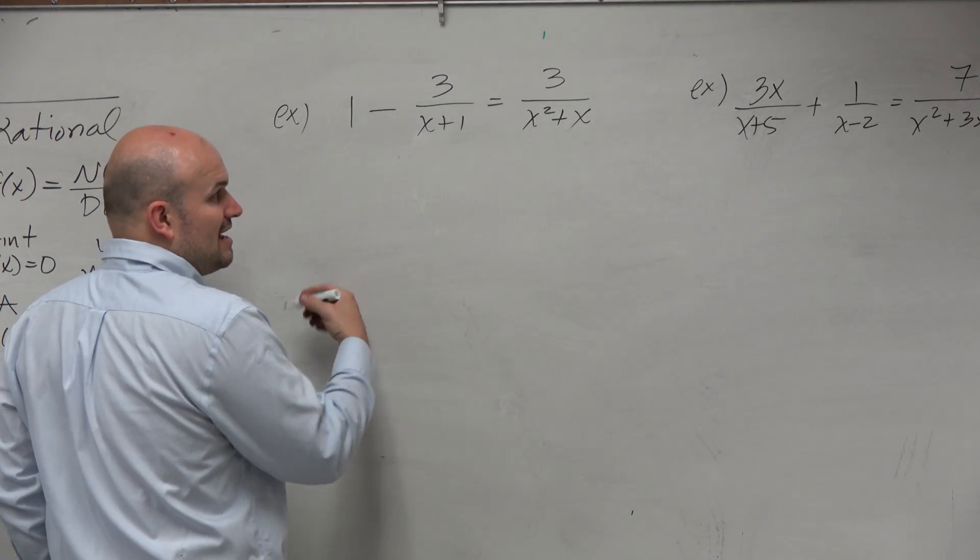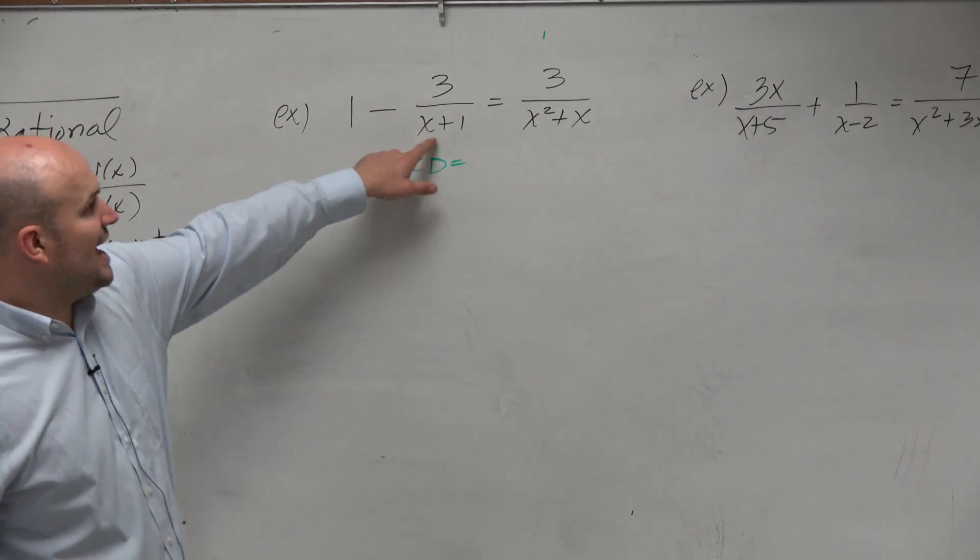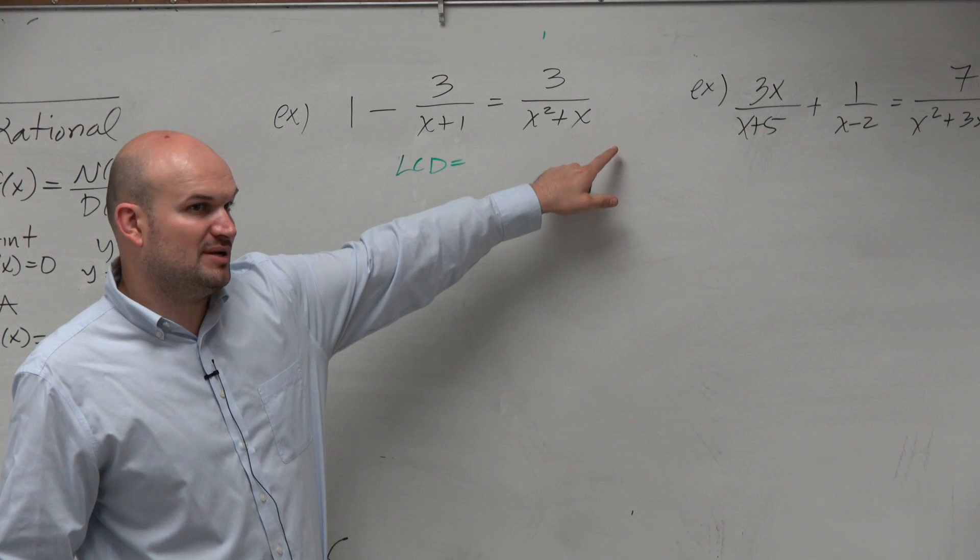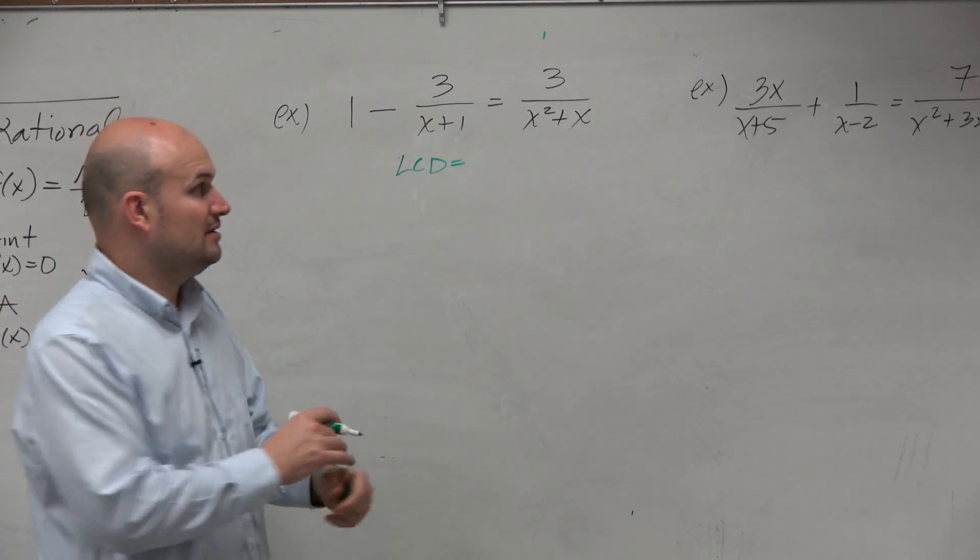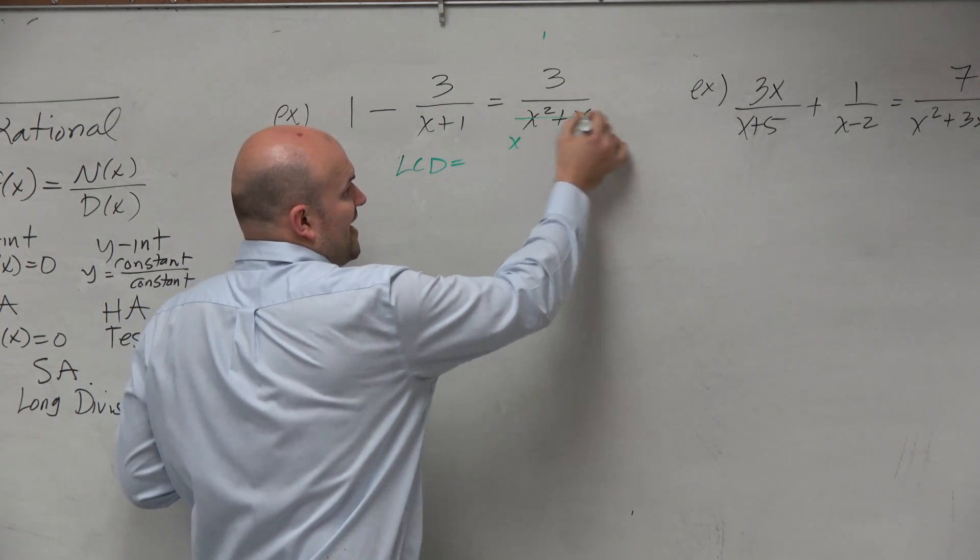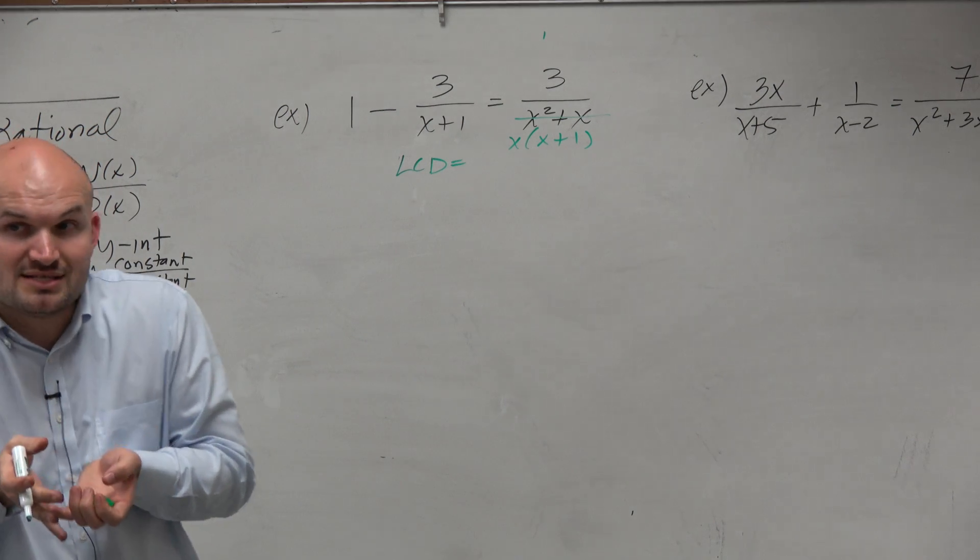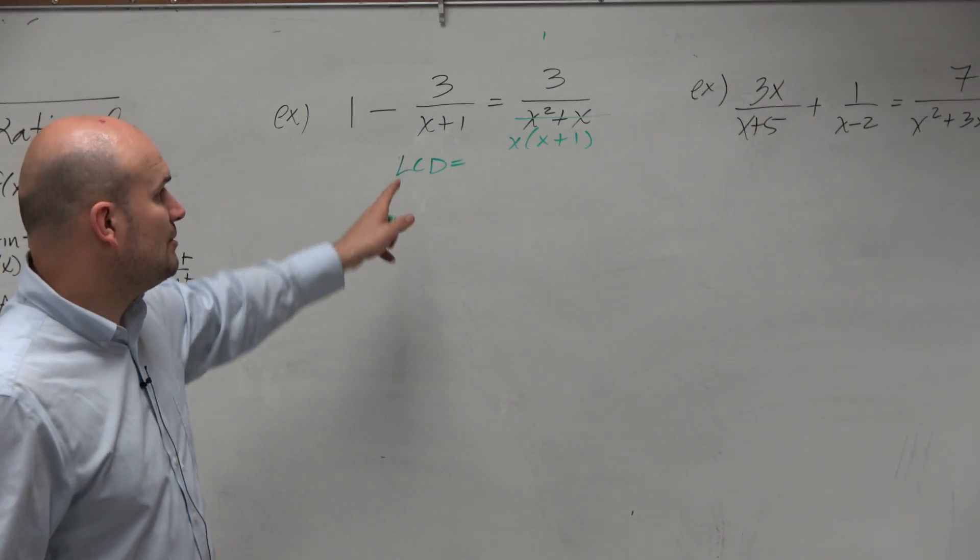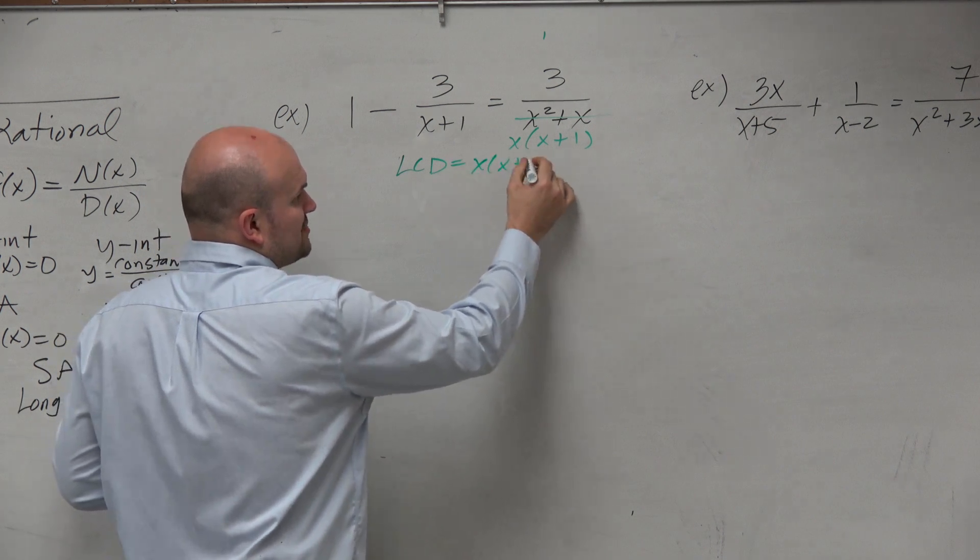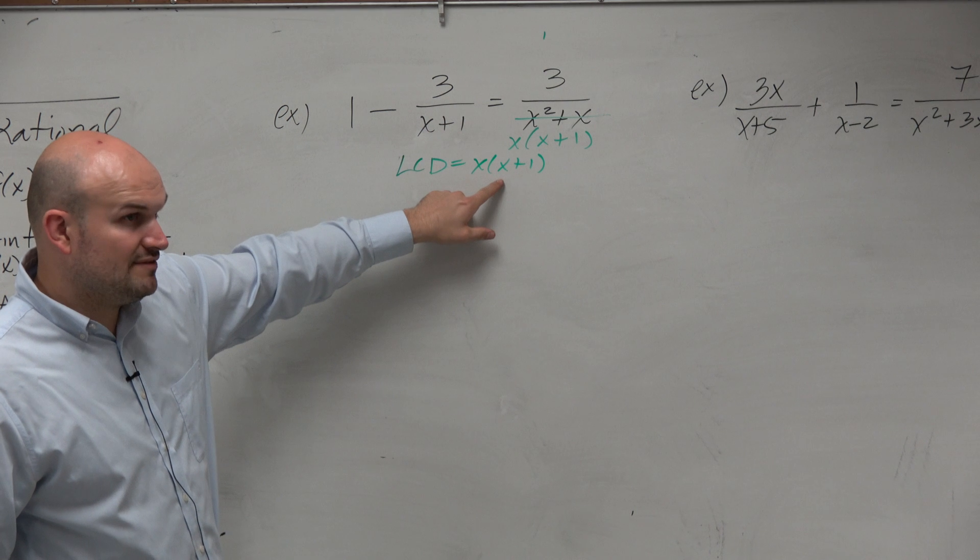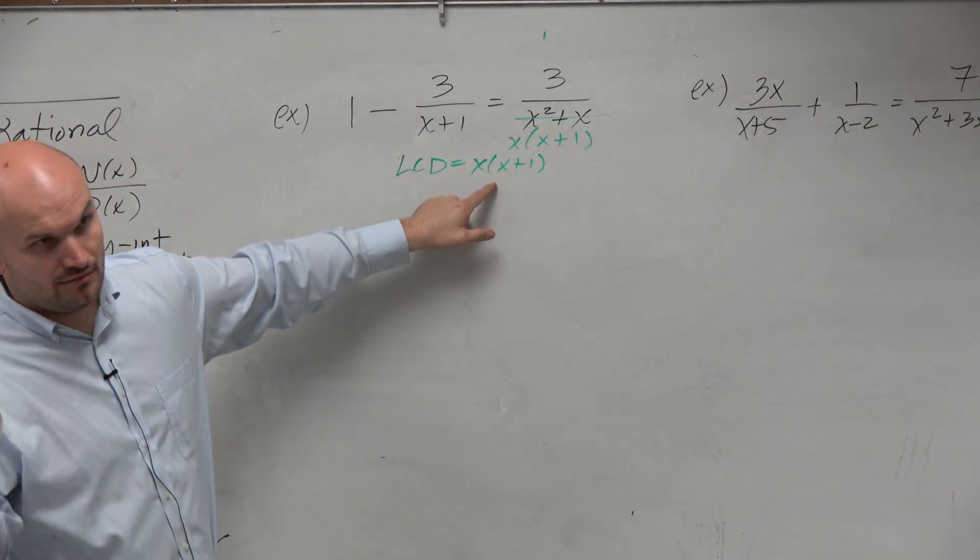I like to get rid of the denominator. I want to find an LCD. I want to find an expression that both x plus 1 as well as x squared plus x divide into. And immediately you might just think, oh, just multiply them. However, we always want to look into factoring. And if I can factor this, I don't need to write x plus 1 once because they both share x plus 1. So my least common denominator is going to be x times x plus 1. Because x plus 1 divides into that x times, and x times x plus 1 divides into that one time.